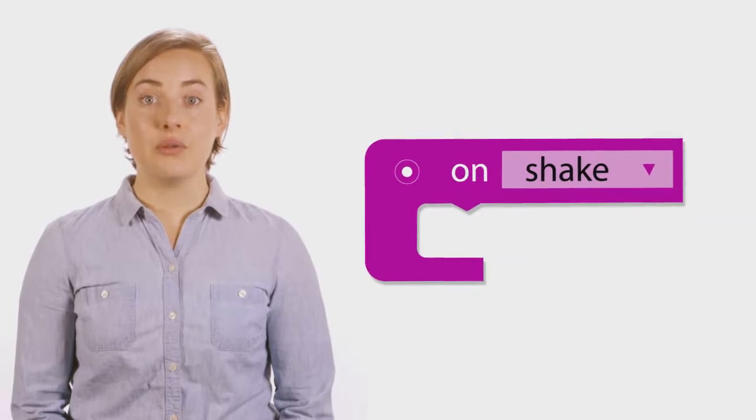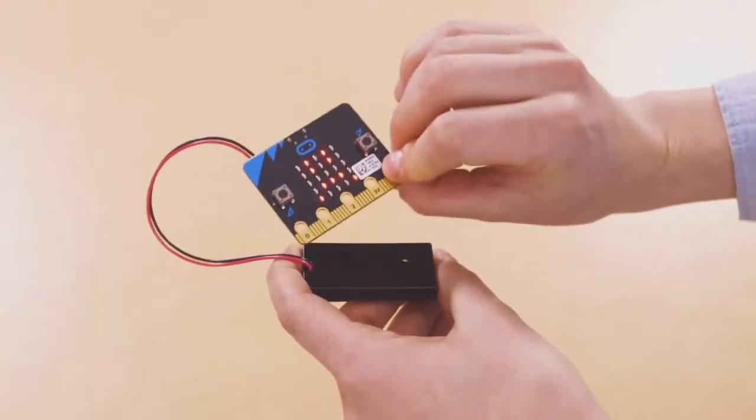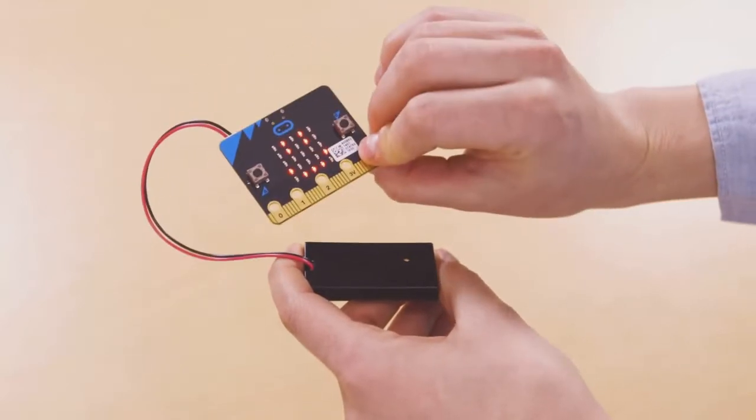You can use the shake code block to trigger program events. The accelerometer then allows you to shake the microcontroller to interact with your program.